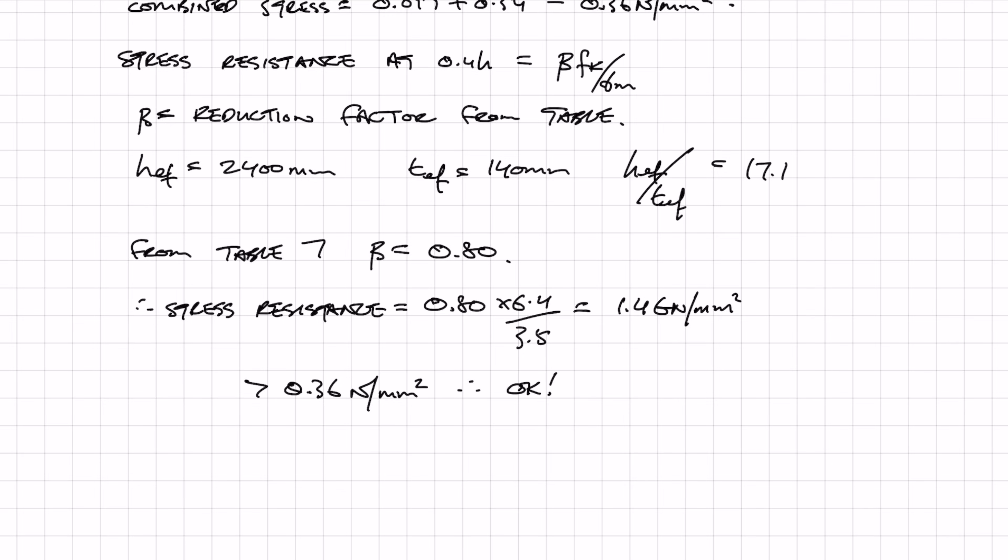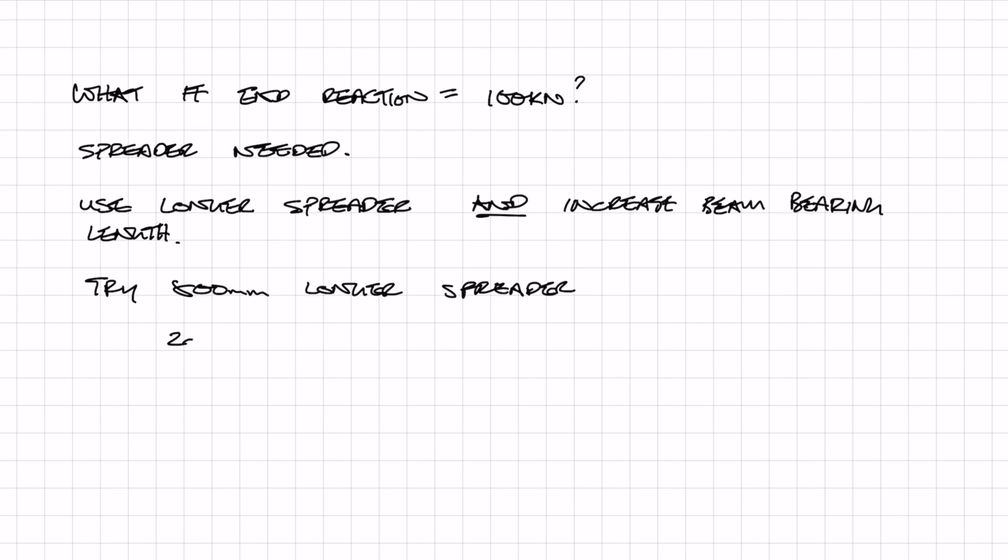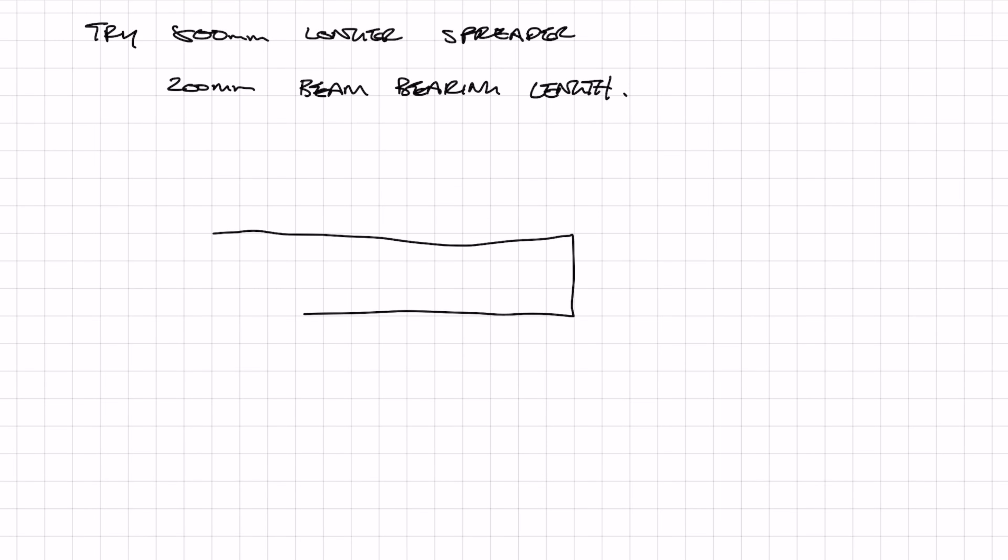Now I'm going to show you what you can do if the reaction force is really high. Why don't we try a beam end reaction of 100 kN. We know that a spreader is definitely going to be needed because if 50 kN needs a spreader, then 100 kN obviously needs a spreader. What we can do is use a longer spreader beam, and in reality this could be a precast concrete lintel. What we can also do is increase the beam bearing length. So before it was 100 millimeters, what we're going to do now is increase it to 200 millimeters, and we're also going to be using an 800 millimeter long spreader. The reason that we want to increase the beam bearing length is quite simply so that the end reaction is closer to the centroid of the spreader, and this basically just reduces the bending moment and therefore reducing the stress.